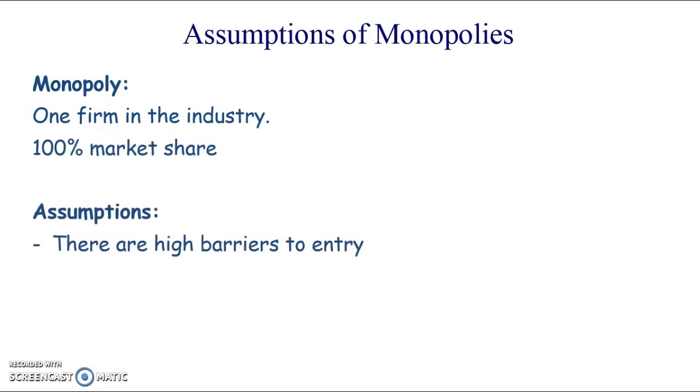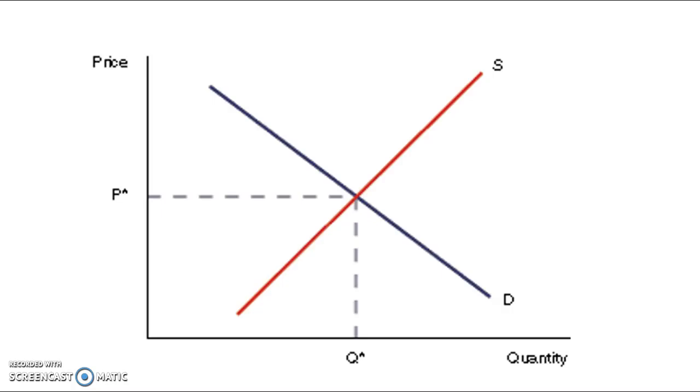So the assumptions of the market are that there are high barriers for entry, meaning there's only one firm and they're very protected. The firm is the industry, the products are unique because there are no other competitors and they're price makers, meaning that they can set the price.